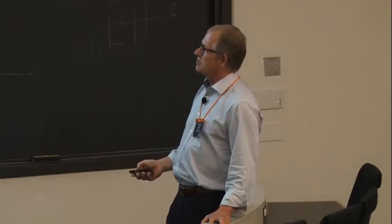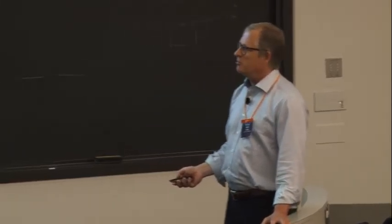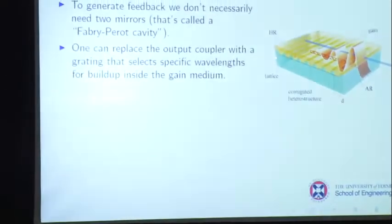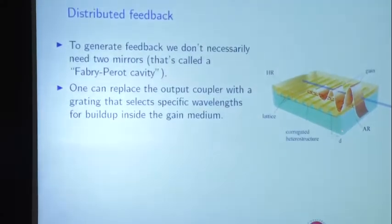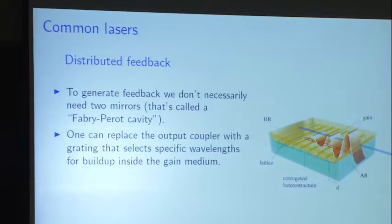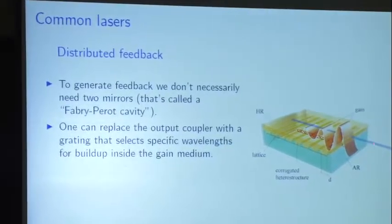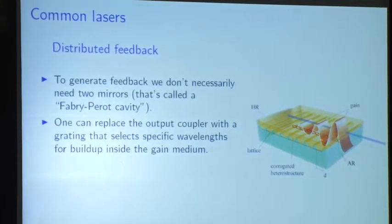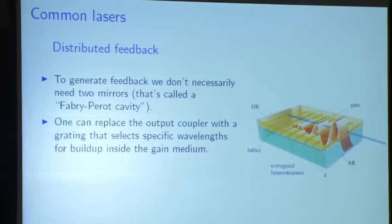For distributed feedback, you don't really need to have a Fabry-Perot cavity. Here's a diode laser with a high reflector on the back and a diode chip. Then there's a thing like a grating — there is no mirror on the other end. This grating is going to reinforce specific wavelengths.